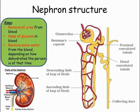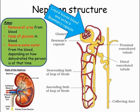Blood arrives under high pressure into a network of capillaries called the glomerulus. Capillaries are leaky, so much of the liquid and soluble material within the blood leaves and enters the Bowman's capsule. This liquid passes through a very narrow tube all the way to the bladder.